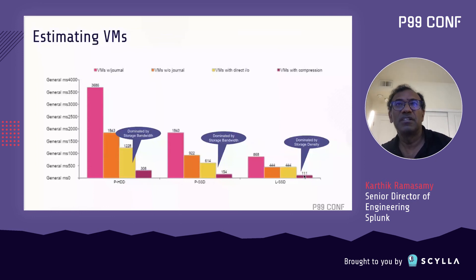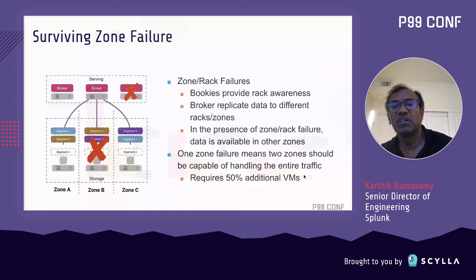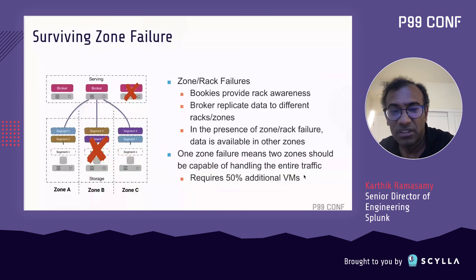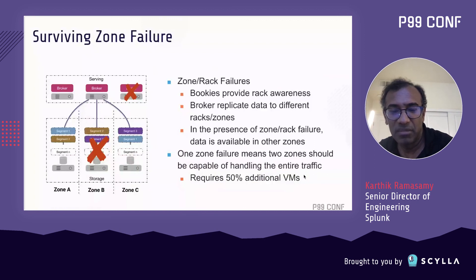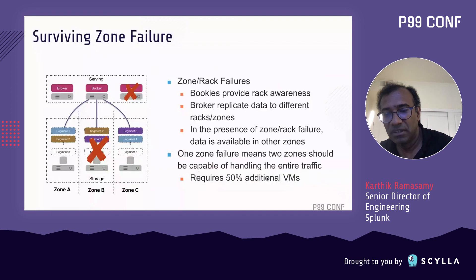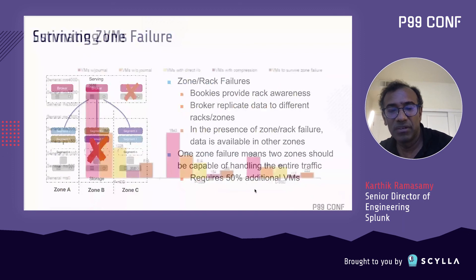We also need to continue ingesting data when zone failures occur in the cloud. Pulsar provides rack and zone awareness — brokers replicate data to different racks and zones so that in the presence of a zone or rack failure, data is available on other zones without interruption. If one zone fails, the remaining two zones must handle the entire traffic, requiring 50% additional VMs. With this overhead: PHDD goes to 616, PSSD to 308, and local SSDs to 220 nodes.